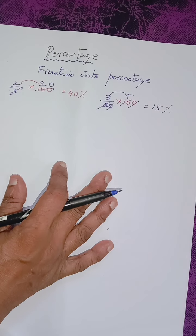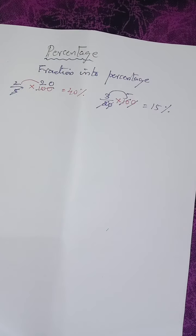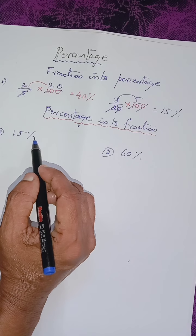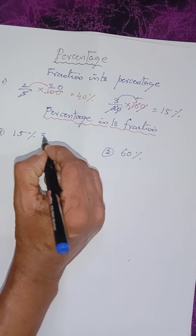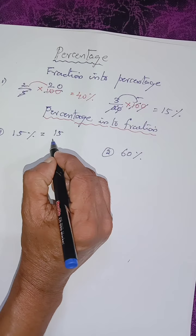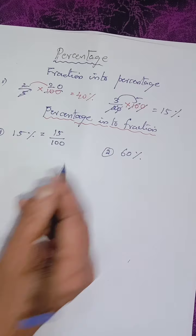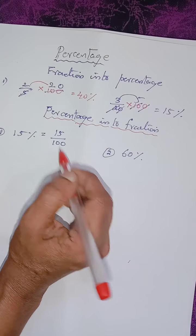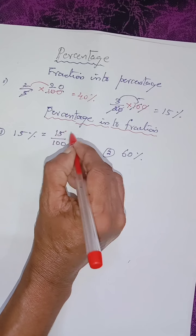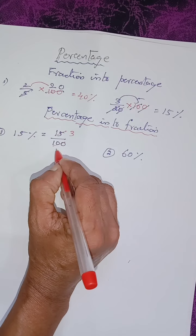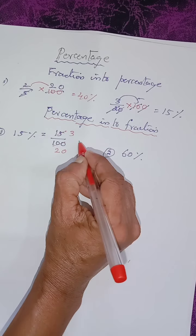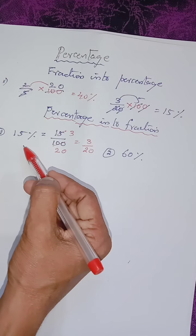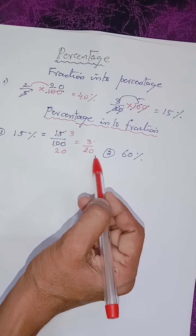Now let us see how to convert the percentage into fraction. Here they have given 15 percentage. So how to convert into fraction? Very simple — just write 15 percentage as 15 by 100. Then 15 and 100: can we cancel in the 5th table? 5th table: 15 is 3 times, and 100 is 20 times. So we can write this as 3 by 20. The fractional form of 15 percentage is 3 by 20.